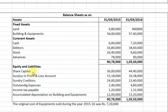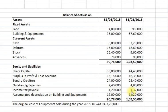On the equity and liability side: Share capital Rs. 36 lakhs and Rs. 44,40,000. Surplus in profit and loss account Rs. 15,18,000 and Rs. 16,38,000. Sundry creditors Rs. 24,00,000 and Rs. 23,40,000. Outstanding expenses Rs. 2,40,000 and Rs. 4,80,000. Income tax payable Rs. 1,20,000 and Rs. 1,32,000. Accumulated depreciation on buildings and equipment Rs. 12,00,000 and Rs. 13,20,000. Additional information: the original cost of equipment sold during the year 2015-16 was Rs. 7,20,000.